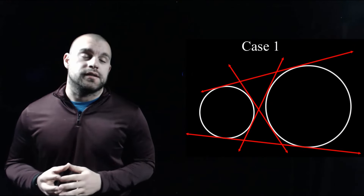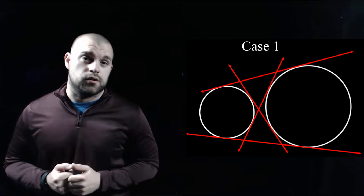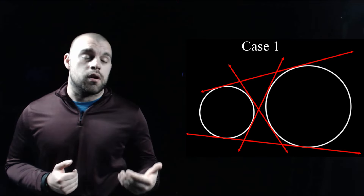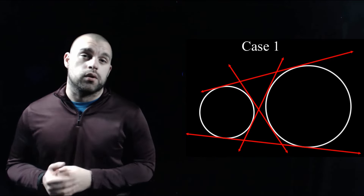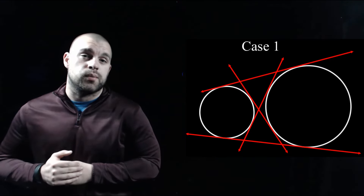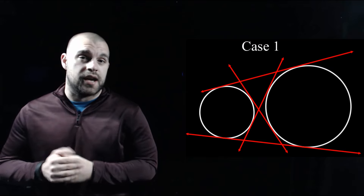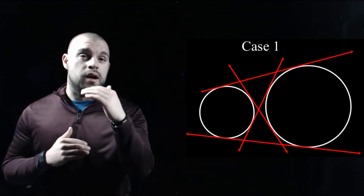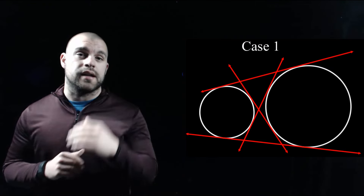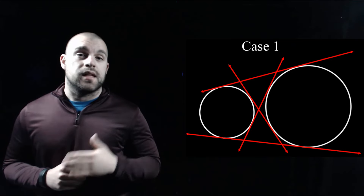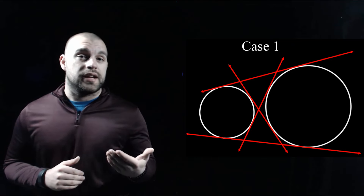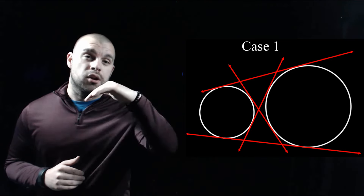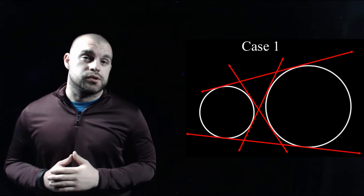The first case is where we have two completely separate circles. If we're drawing in common tangents, there are going to be four common tangents we can draw in this case. There are two exterior tangents, which are on the outside of our circles, and then we have what are called interior common tangents, which run in the middle between our two circles.